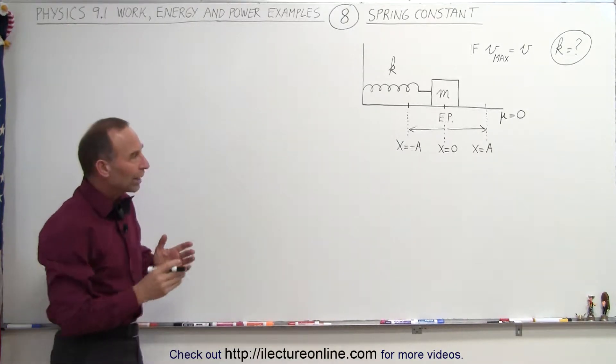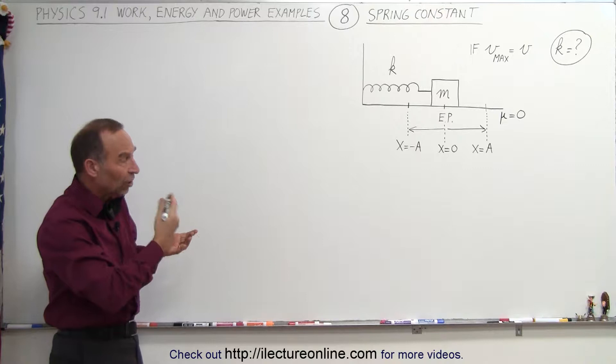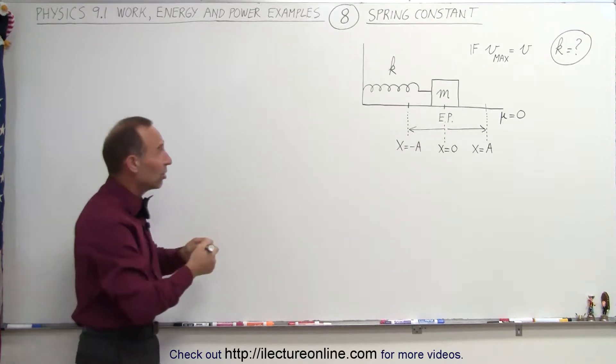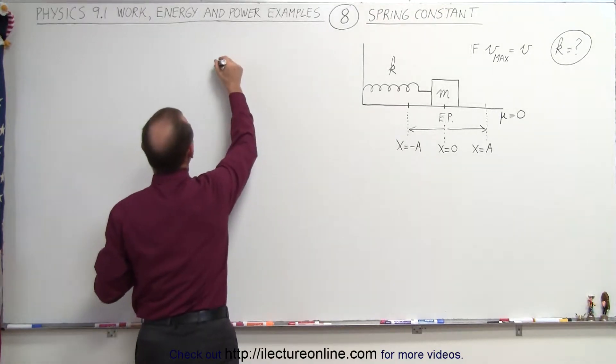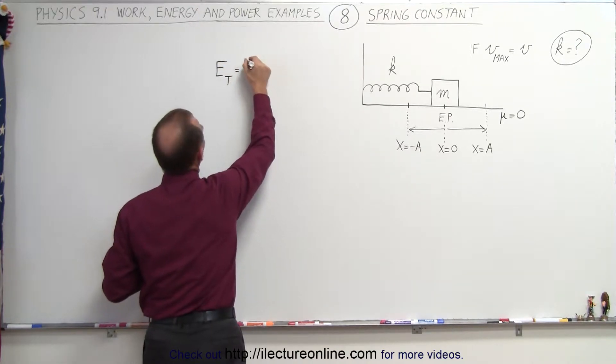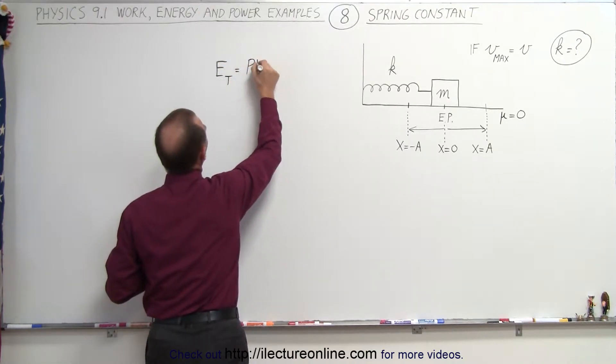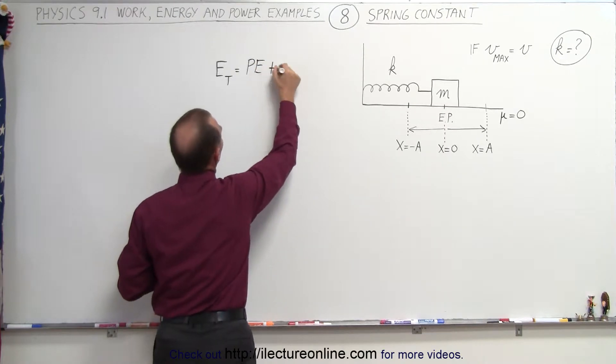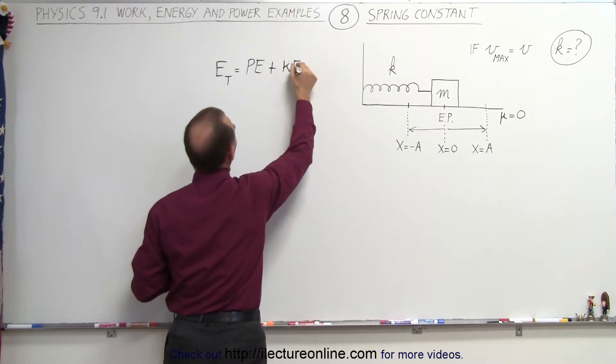We also know that the total energy in the system, which is typically a sum of both the kinetic and potential energy. We can write that down: the total energy is equal to the sum of the potential energy at any moment in time plus the kinetic energy at that moment in time.